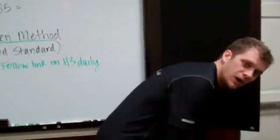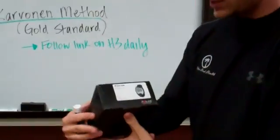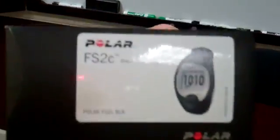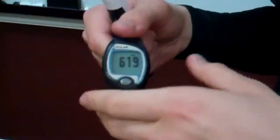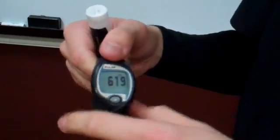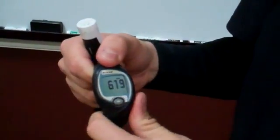The more basic model, the one that I have is the FS2C. This has just one simple button. When you press the button, it will bring up your heart rate at that period of time. It will also calculate your average heart rate. So you'll notice right now it has the time of day on the screen.